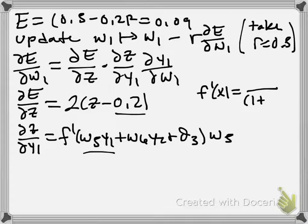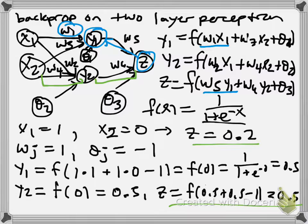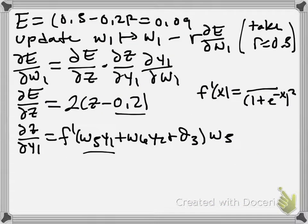So we just do the chain rule on that, and we have 1 plus e to the minus X squared on the bottom. We would have gotten a minus 1 out in front, but we have to compute the derivative of 1 plus e to the minus X, so we get a minus e to the minus X. The minus signs cancel, and we get e to the minus X up top.